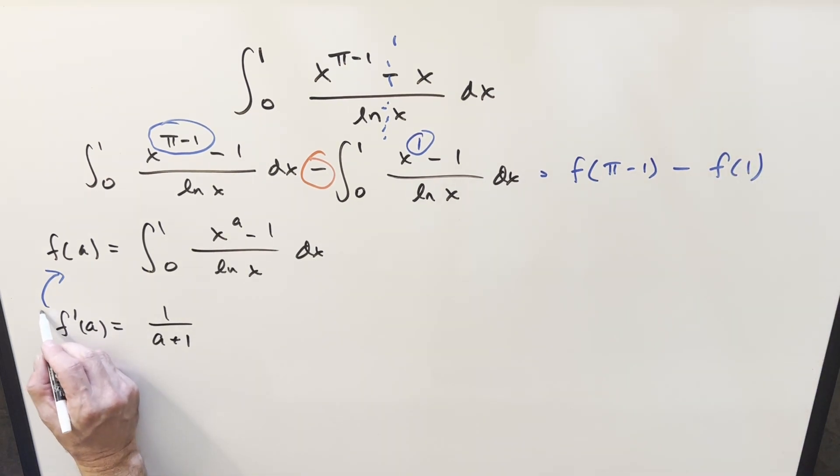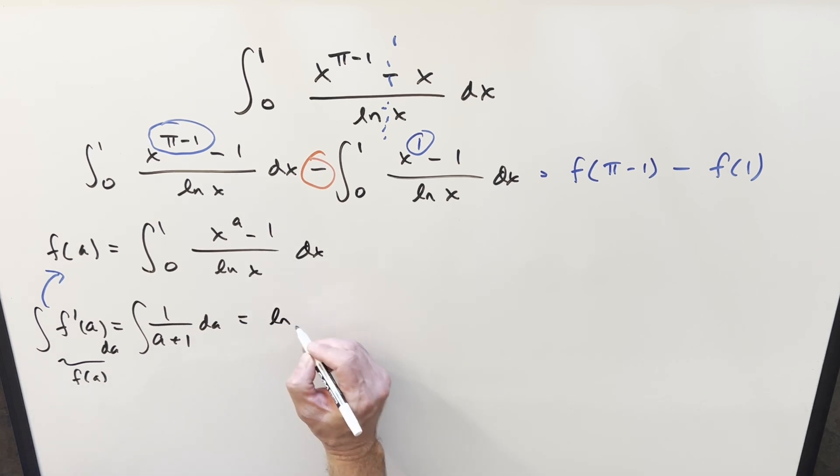So what I can do over here, let's just integrate this with respect to a, do it on both sides, integrate with respect to a. That way, this right here is going to be our f of a value. So doing this here, we get natural log a plus 1 plus c on this.